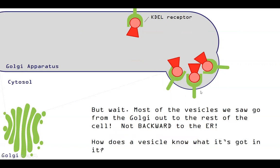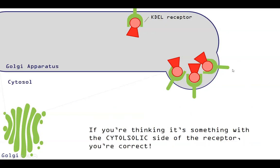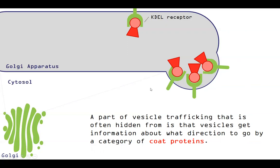But wait, most of the vesicles we saw going from the Golgi are going out to the rest of the cell, not backward to the ER. So how does the vesicle know in this time that it's not supposed to go to the lysosome? It's supposed to go to the ER. It's supposed to go backwards. So we haven't gotten into a lot of detail about this, but I'm going to start adding it in. The way that it knows what's going on internally is signaled to the outside. So these KDEL receptors, once they have their KDEL cargo bound, the cytosolic side is going to tell this vesicle where to go. So it can interact with other things out in the cytosol.